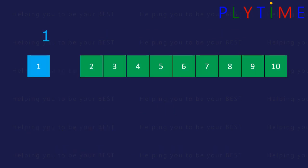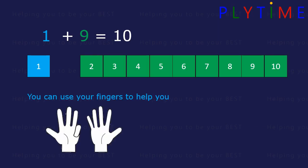1 plus 9 equals 10. We can use our fingers. We've got 10 fingers. So if you put down 1, you've got 9 still left. 1 and 9.